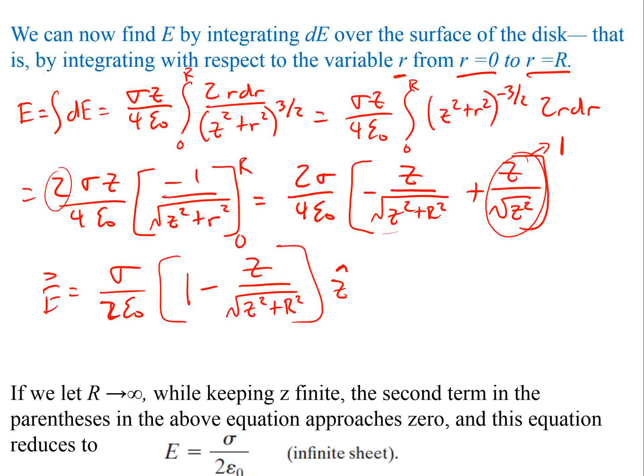Now if we let R go to infinity, which means this big R here, which means you're creating an infinite plane, the second term in the parentheses in the above equation is going to approach 0. So as this gets bigger and bigger, this value gets smaller and smaller, which means 1 minus something really small is just 1. So the equation that we can use for an infinite sheet of charge is just going to be simply E equals sigma, which is the area charge density, divided by 2 epsilon naught.